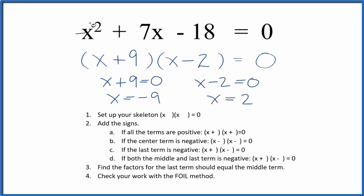So if you put negative 9 in for x, do the math, this will all equal 0. Likewise, if you put 2 in for x and you do the math, this will all equal 0 as well.